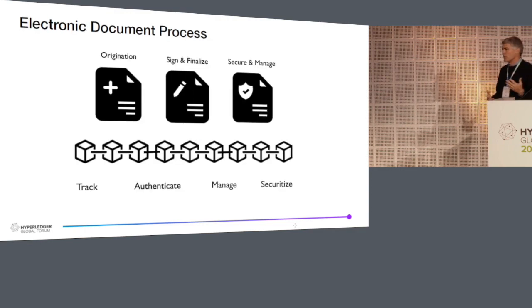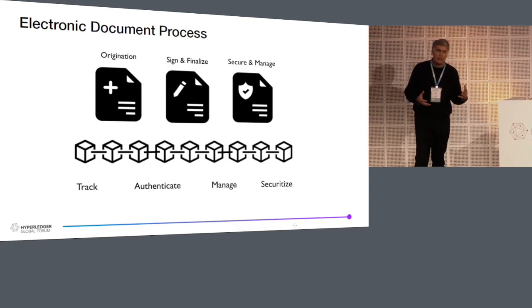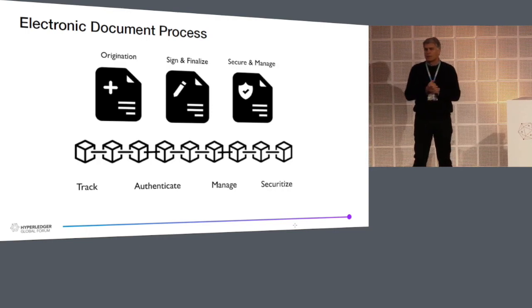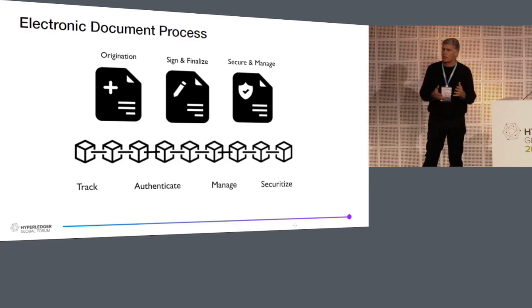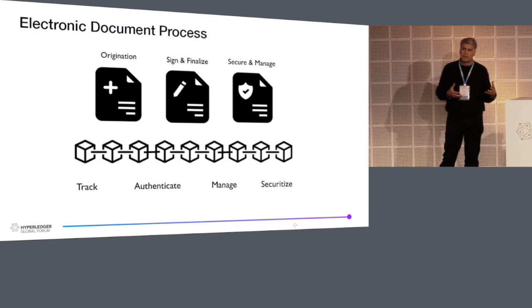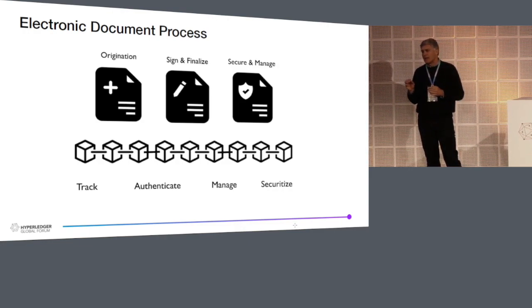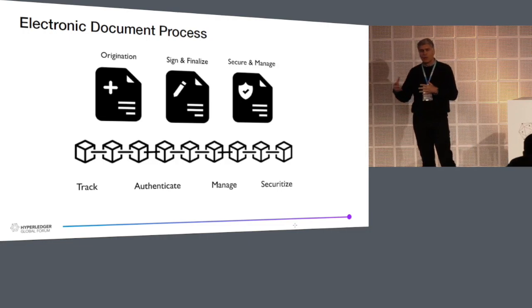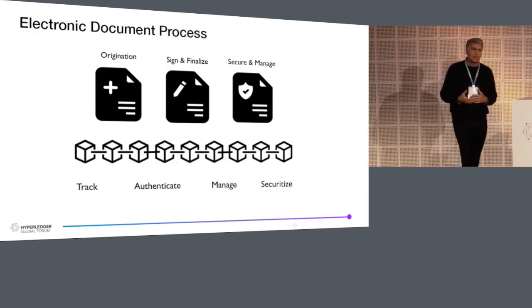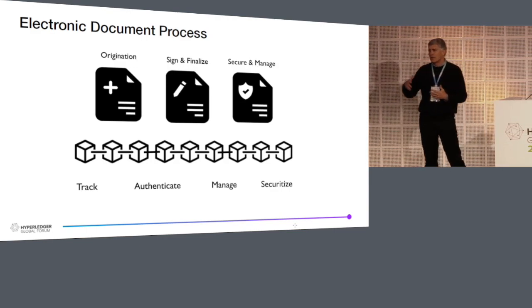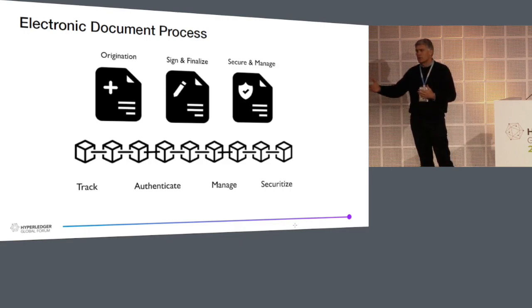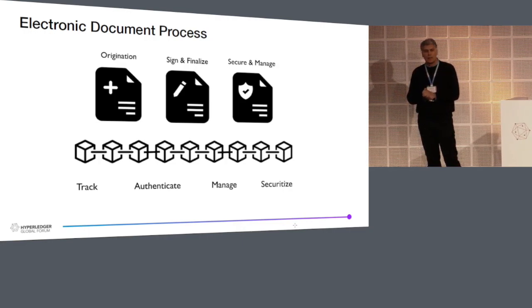If we take a step back and look at the electronic document process, we really have three major components. One is origination — that origination is customized to the specific terms and conditions of the transaction taking place. This transaction can be business to business or business to consumer. From the unique terms and conditions, the agreement is then electronically signed and finalized. From that package of documents, or the close, you then need to manage how those documents are treated post-close from a lifecycle perspective. With these financial instruments, you have the ability to securitize them — sell them out to a secondary network of investors to provide more efficient use of capital.